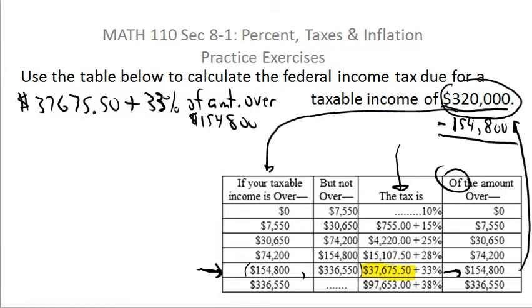Now make sure before we go forward that you've got it. It says from the table, I'm reading this line right here, that the tax is $37,675.50 plus, I'm reading this off, plus 33%, so I'm just writing it down, 33% of what? Of the amount that went over $154,800. So to find out how much it went over by, you subtract. So you subtract $320,000 minus $154,800.